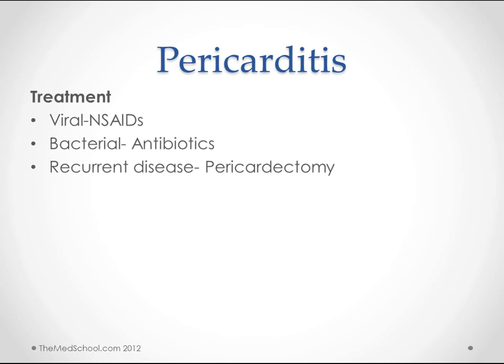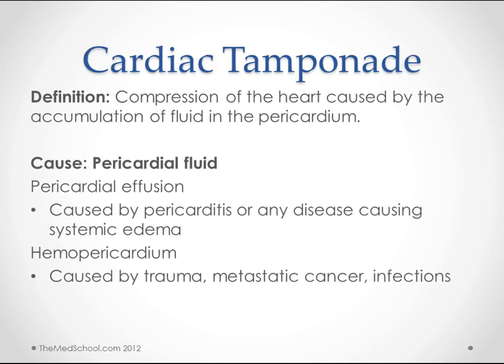To treat pericarditis, if it's viral, all we have is NSAIDs — we just want to reduce the inflammation. For bacterial pericarditis we give antibiotics. In some cases a pericardiectomy is done if it becomes a recurrent problem. Moving on to the next pathology, we'll talk about cardiac tamponade. This is related because pericarditis can cause pericardial effusion, which can lead to cardiac tamponade.